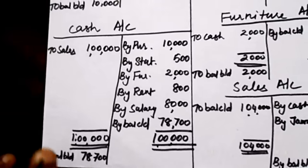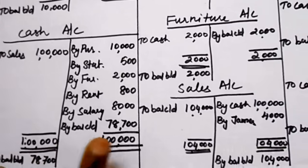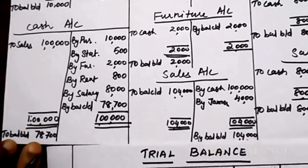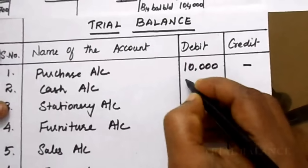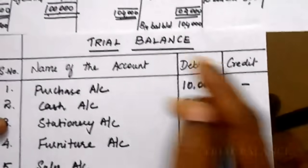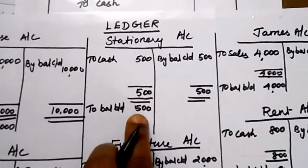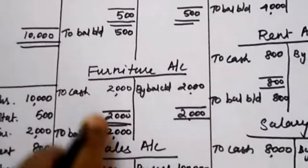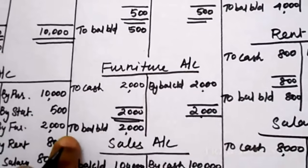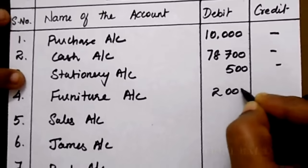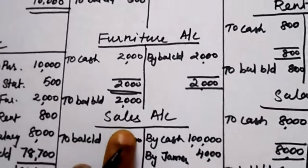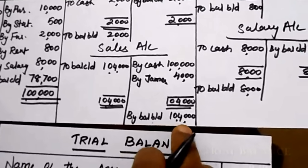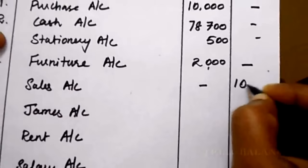Cash always has a debit balance because receipts are higher than payments — enter 78,700 under the debit column. Stationery account: debit balance, 500. Furniture is an asset — debit balance, 2,000. Sales is revenue — income always has a credit balance; enter 1,04,000 under the credit column. James is a debtor — debit balance; enter that amount under the debit side.